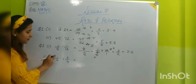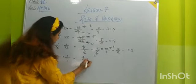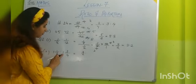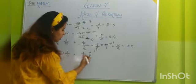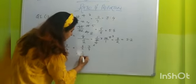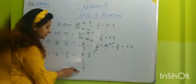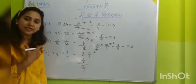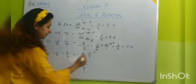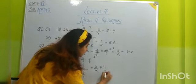1 times 2 is 2, 2 plus 1 is 3. So it will become 3 upon 2 ratio. 1 times 4 is 4, 4 plus 3 is 7. That is 7 upon 4. So how you can write this? 3 upon 2 divided by 7 upon 4. As you saw in previous one, when denominator part goes up what happens? It will become 3 upon 2 multiplied by 4 upon 7.